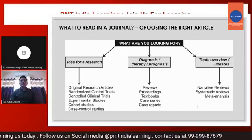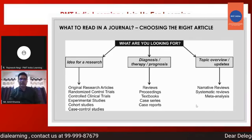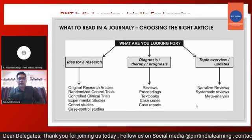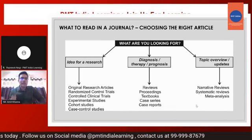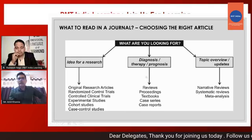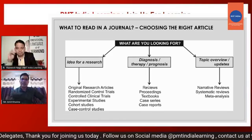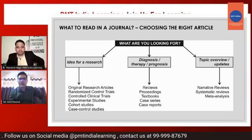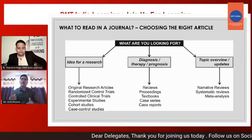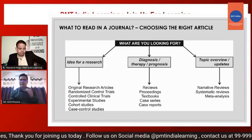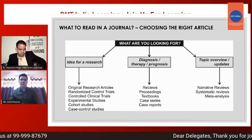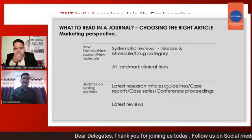How to choose the right article depends on what you are looking for. For a researcher seeking a new idea, original research articles, controlled trials, and experimental studies are what to look for. For diagnosis, therapy, or prognosis areas, reviews, textbooks, case series, case reports, and conference proceedings give more insights. For a topic overview or updates on a therapy or molecule, narrative reviews, systematic reviews, or meta-analyses give deep insight from the very beginning to the present.